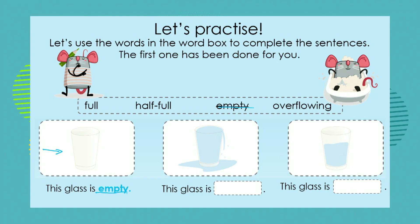Now the three words we have left are full, half full, and overflowing. Which word do you think describes this glass of water — would it be full, half full, or overflowing? This glass is overflowing. We can see that the water is going over the top of the glass and spilling outside, so there is too much water in this glass, which means it is overflowing.